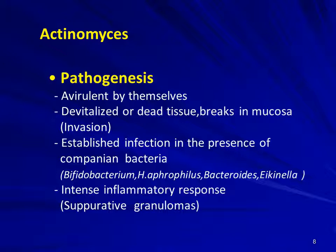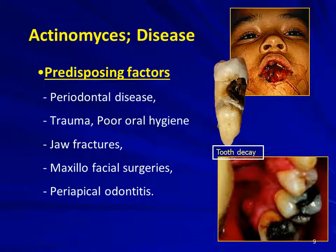Invasion of this bacterium into tissues causes an intense inflammatory response resulting in suppurative granulomas — pyogranulomatous lesions with both pus and granulomatous features. Predisposing factors include periodontal disease, severe trauma, poor oral hygiene, jaw fractures, maxillofacial surgeries, and periapical odontitis. In these conditions, devitalized tissue remains and this anaerobic bacterium grows where blood supply is lacking.